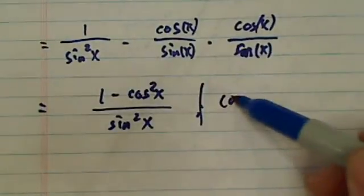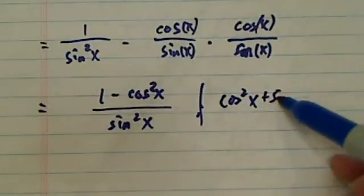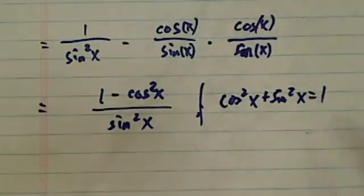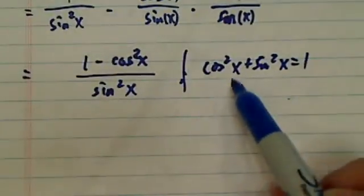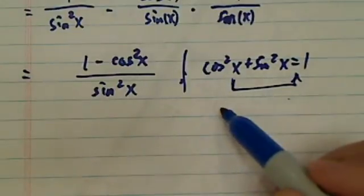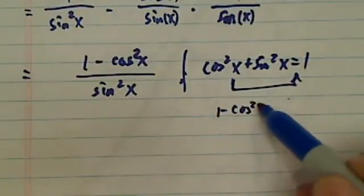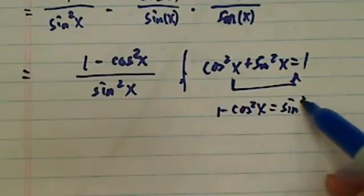Now knowing that cosine square of x plus sine square of x equal to 1, that gives you the top. If you were to reverse this one, transform it a little bit, you'll see that 1 minus cosine square of x is really equal to sine square of x, OK?